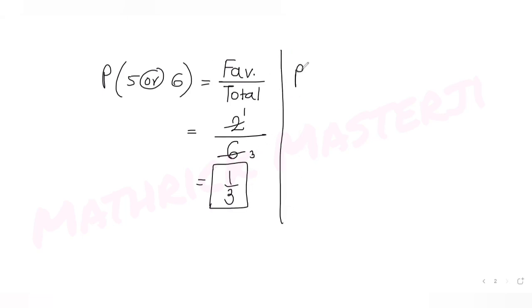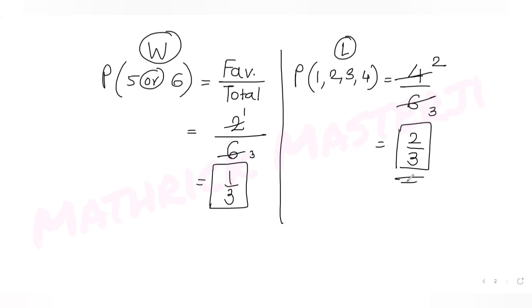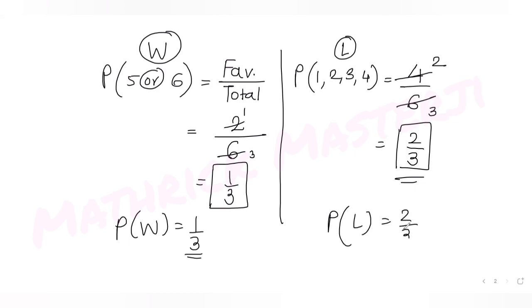So the probability of winning is 1/3, since he wins by getting a five or six. Now let's find the probability of losing, which means getting one, two, three, or four. The favorable outcomes are four out of six total, giving us 4/6 = 2/3. So the winning probability is 1/3 and the losing probability is 2/3.